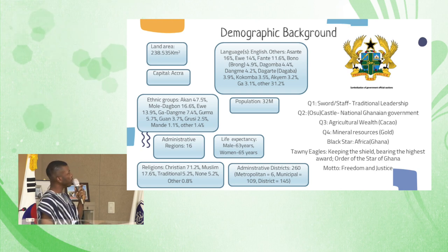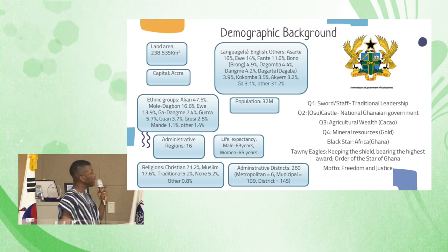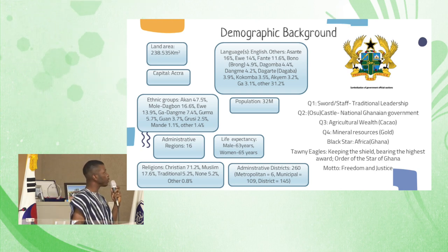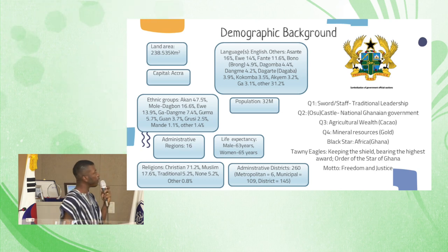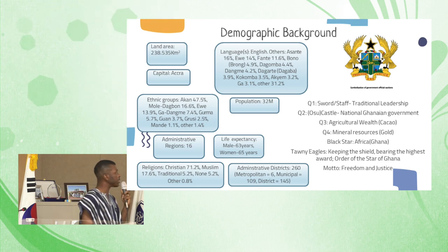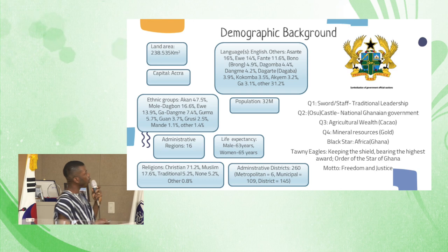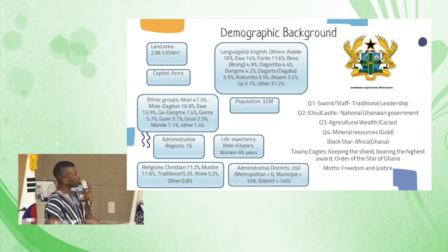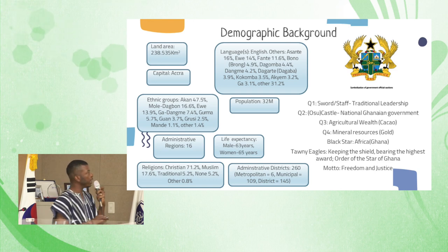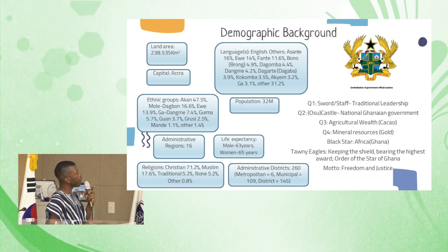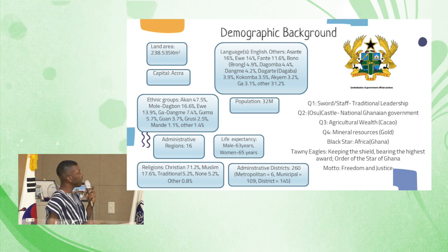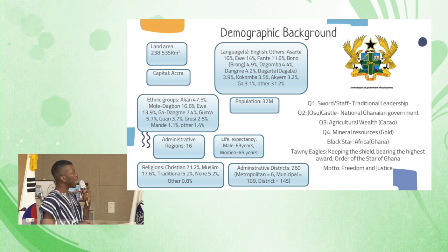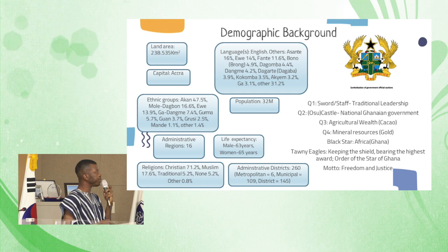The picture on the right is our coat of arms, which symbolizes official government sanctions. It has four quarters. The first quarter has the sword or the staff, which represents traditional leadership.